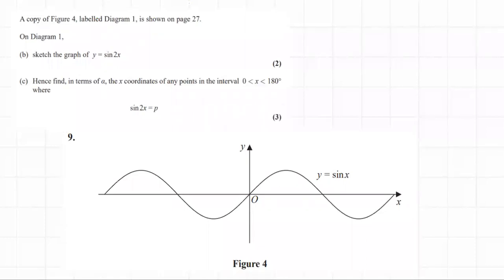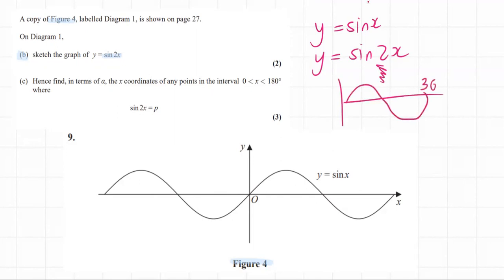Number b wants us to sketch the graph of y equals sine 2x onto this same Figure 4. So we're trying to sketch what this was. Y equals sine x is drawn already, and we need to sketch y equals sine 2x. Well, we know that this b factor squishes the graph by a factor of two.